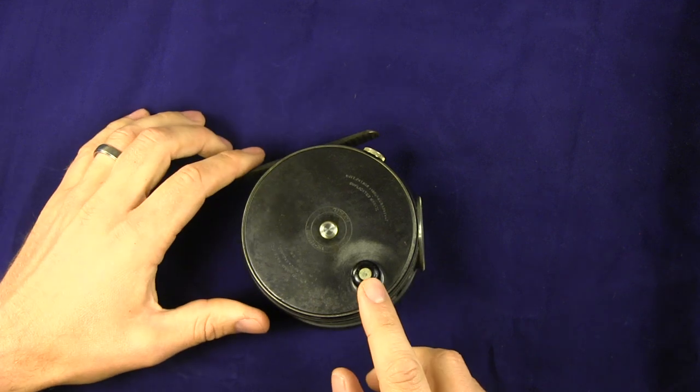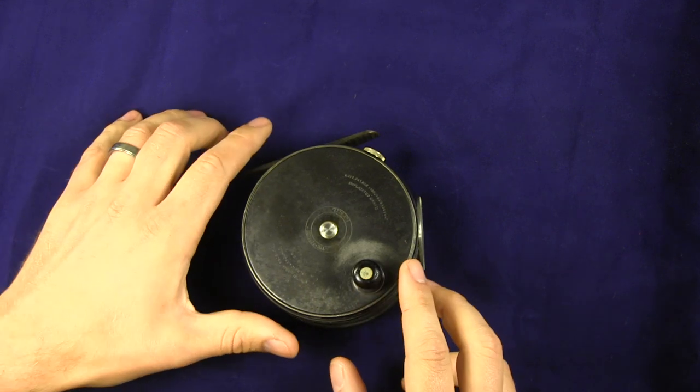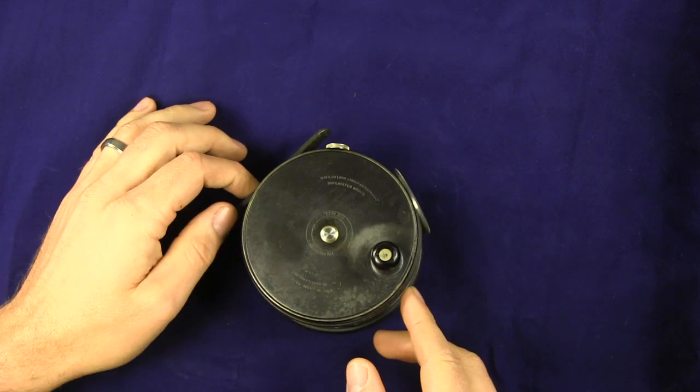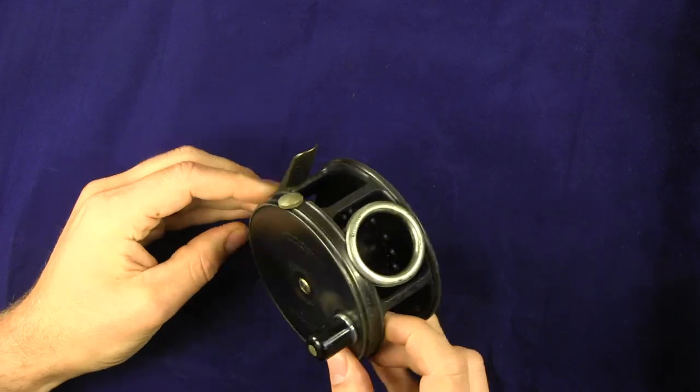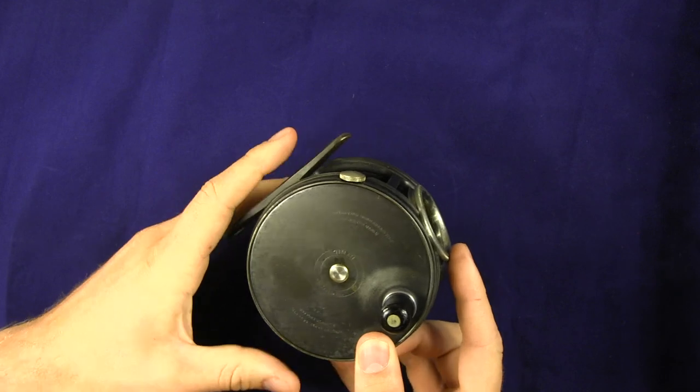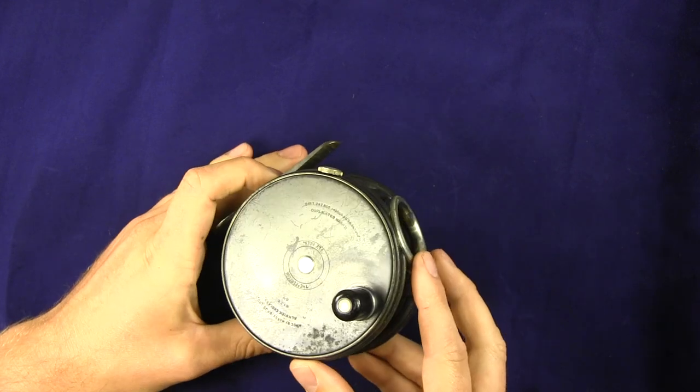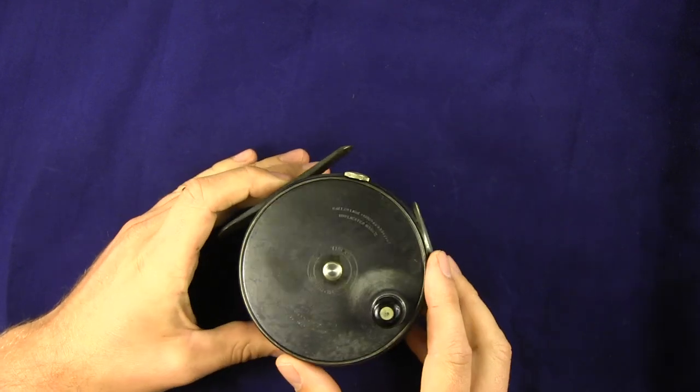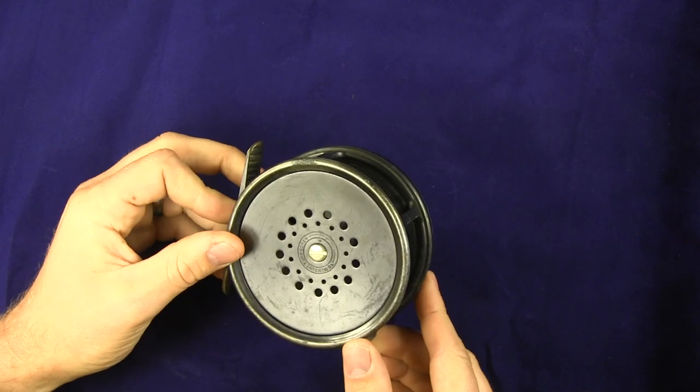This is a pre-war reel, so pre-World War II. Going over a little bit about the dating of this reel, as you see, it's got a full length ribbed brass foot, it's got a line guard, it's got the leading finish on it. You can see quite a bit of that leading still left on the face plate here on the spool side as well.